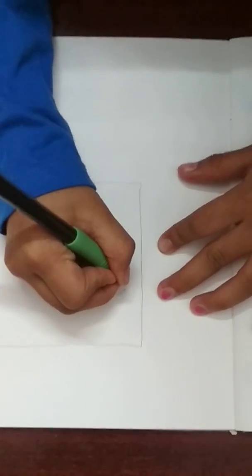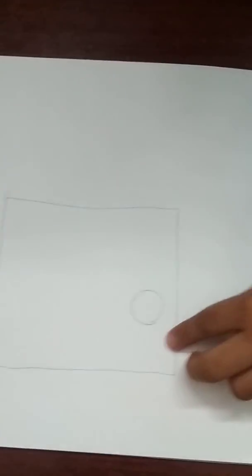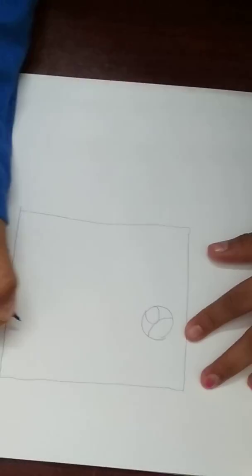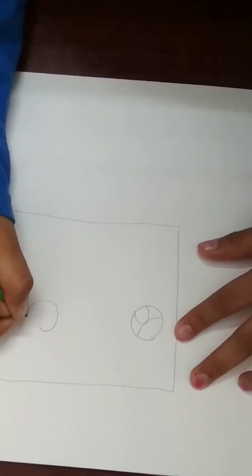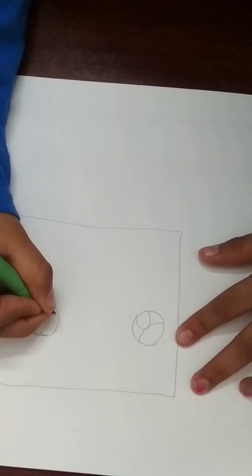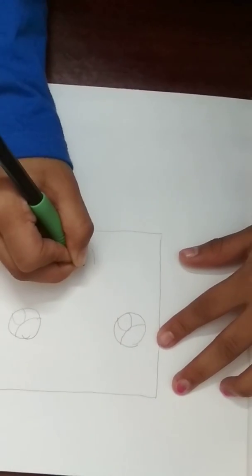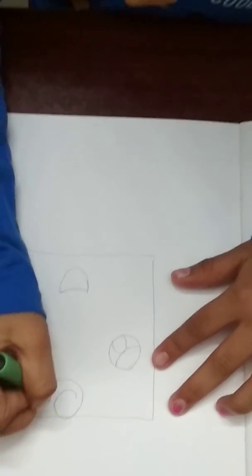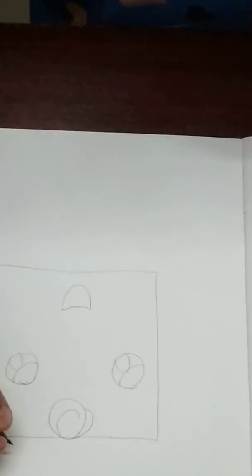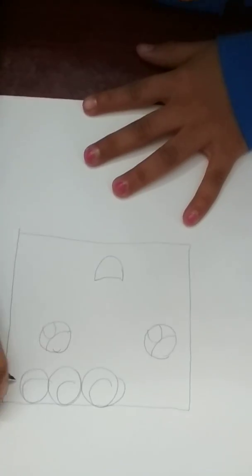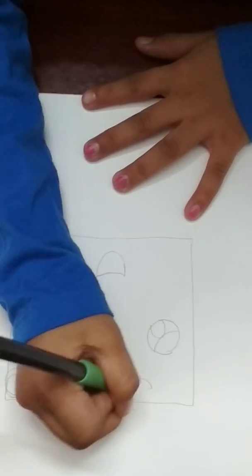After drawing a square, draw two eyes leaving some space over here, like this over here also, and the mouth. Draw swirls.